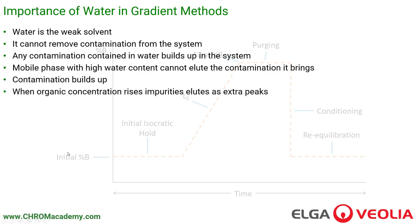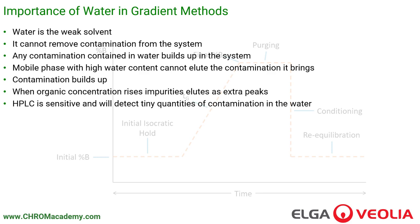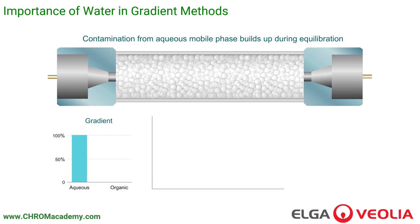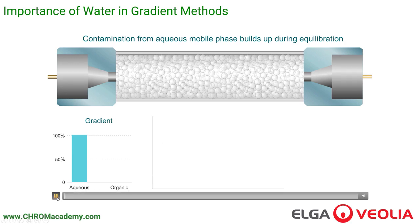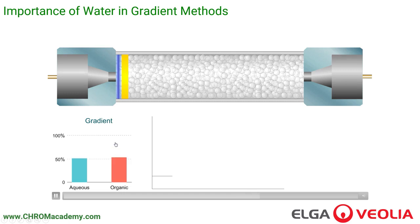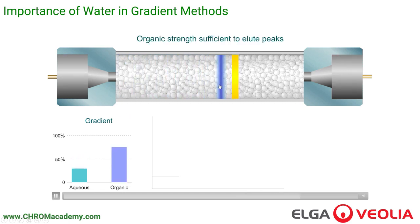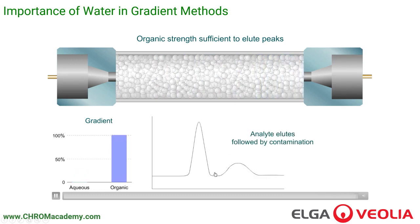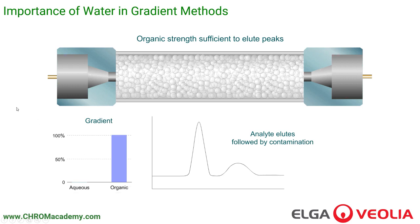When the organic concentration rises, the impurities start to elute as peaks. HPLC is very sensitive and it will detect tiny quantities of contamination in water. What happens is that the water constantly elutes through with the gradient, and as the organic concentration comes up we eventually reach a critical point where the contamination brought on by the water elutes. We then get these huge peaks that appear in our chromatogram, which interfere with the substances we're interested in.